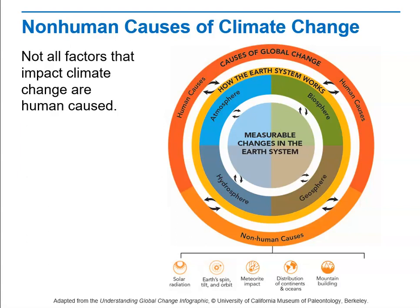Mountain building and volcanoes are also non-human causes. Volcanoes emit a lot of gases, including greenhouse gases, and volcanism can affect climate change. Mountain building is more often caused by plate tectonics and the movement of continents, and it can affect climate by changing the elevation of the surface of the atmosphere. Each of these are non-human causes of climate change.